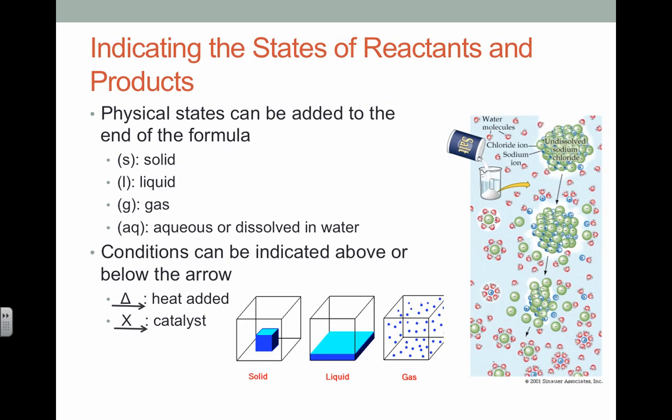Besides balancing the equation, it's also important to know what state of matter the reactants and products are in. Sometimes we'll add symbols after the compound to indicate the state of matter. A solid is S in parentheses. A liquid is L in parentheses. A gas is G in parentheses. AQ stands for aqueous, which means dissolved in water. You can see the difference between the states of matter.